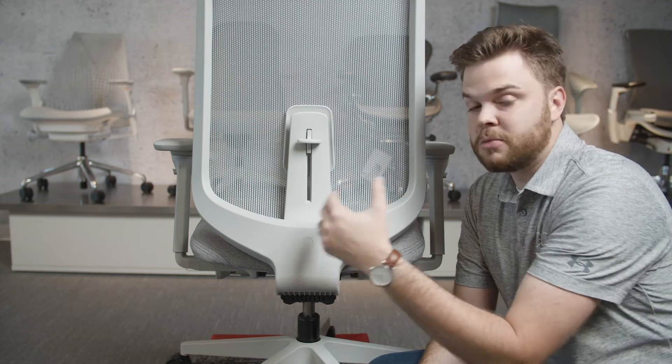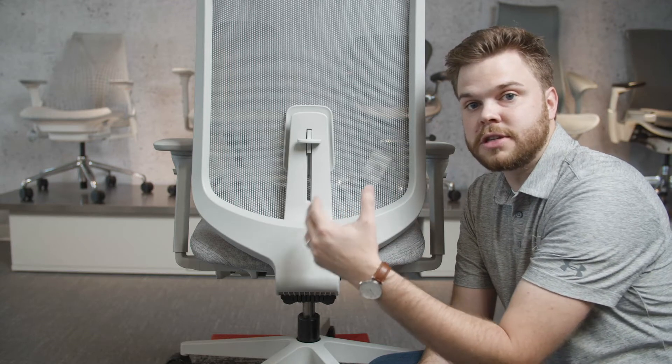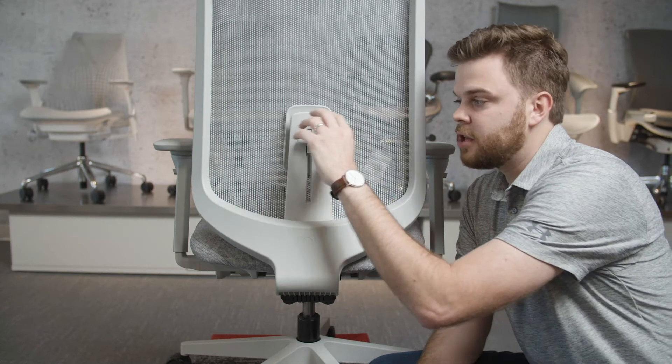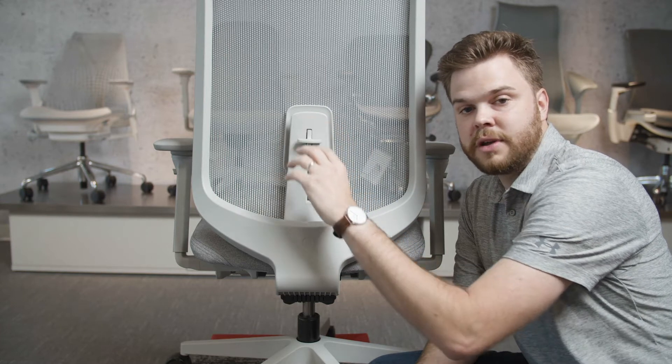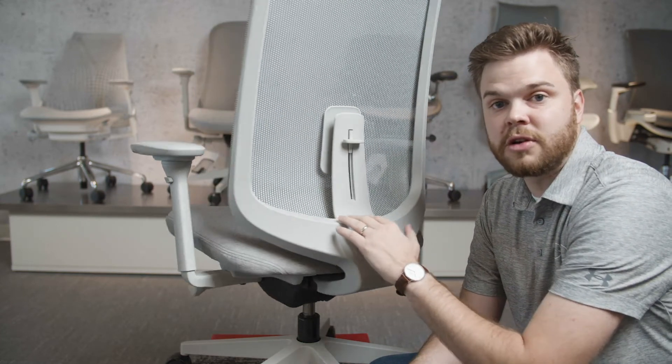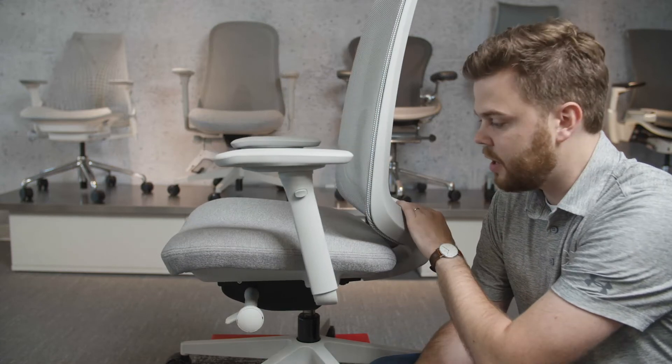But what's almost more important for Herman Miller is called sacral support. So this is the lumbar area of your back. If you go down a little bit lower towards your hips, you've got the sacral bone and that's the sacral area.